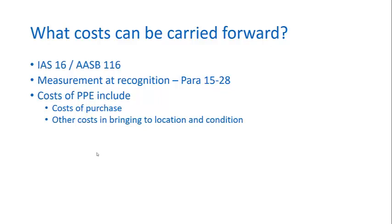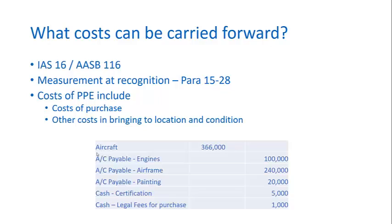It's useful to think of PP&E costs as an extension of how we considered the costs of inventory. To carry on that line of thinking, here is a journal entry that an airline might recognise when purchasing an aircraft: you buy engines, an airframe, you paint it, get certification for it, and pay legal fees — these are all ostensibly part of the cost of an aircraft purchased by an airline.